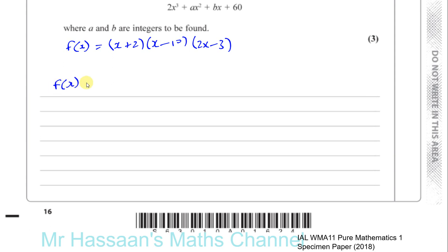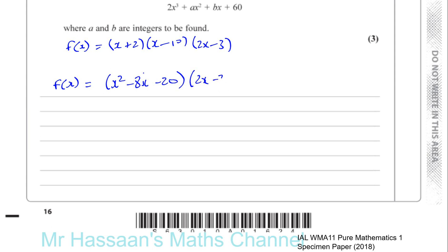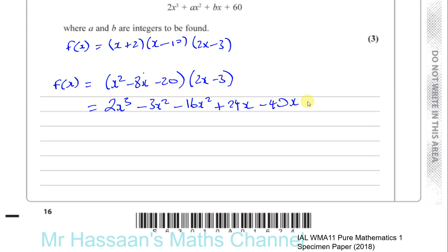What we can do first is expand one pair at a time. I'll expand x plus 2 and x minus 1 first, which gives x squared minus x plus 2x minus 2, that's x squared plus x minus 2. Wait — actually I'll expand x minus 1 and 2x minus 3. That gives x squared, minus 8x, minus 20, multiplied by 2x minus 3. Expanding: x squared times 2x is 2x cubed; x squared times minus 3 is minus 3x squared; minus 8x times 2x is minus 16x squared; minus 8x times minus 3 is plus 24x; minus 20 times 2x is minus 40x; and minus 20 times minus 3 is plus 60.